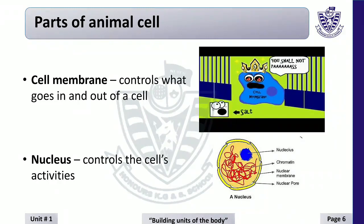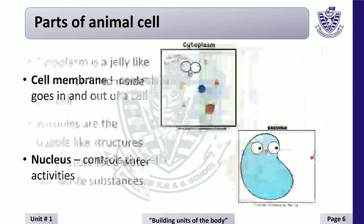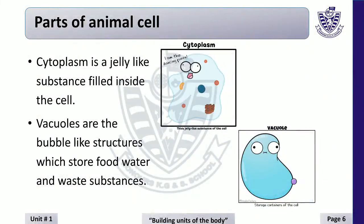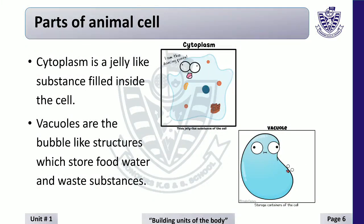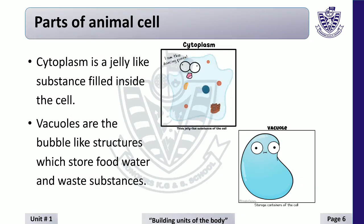Nucleus is also called the control center of the cell because it controls all the activities of the cell. Cytoplasm is a jelly-like substance filled inside the cell, and all the organelles are floating inside it. Vacuoles are bubble-like structures which store food, water, and waste substances.